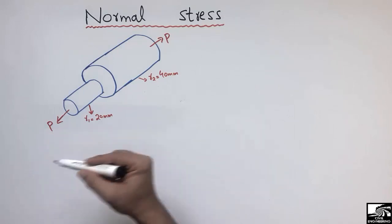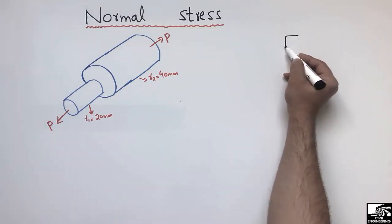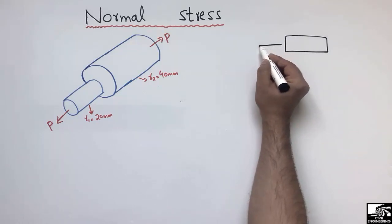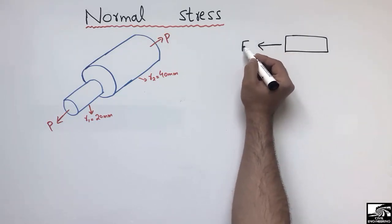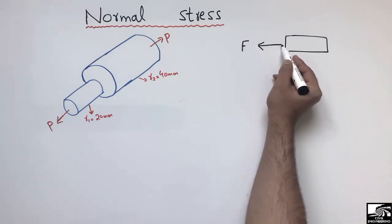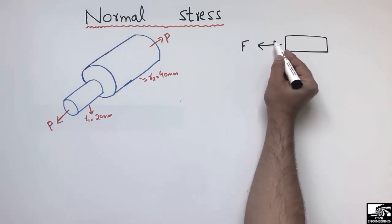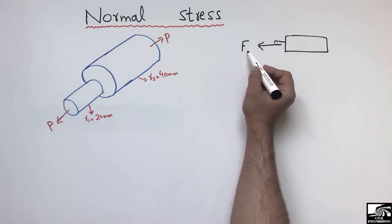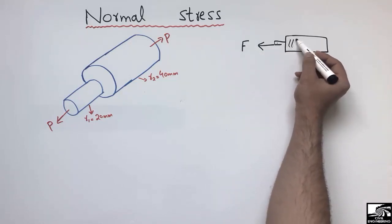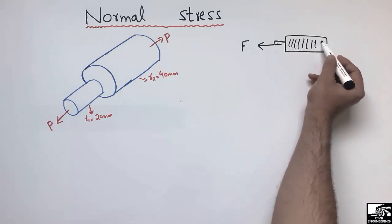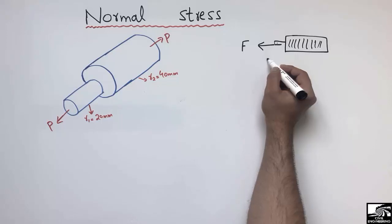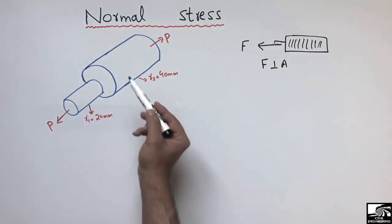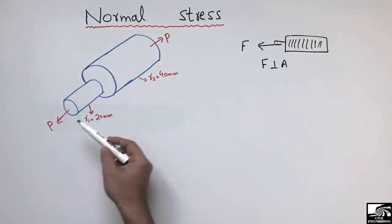If we consider any object subjected to a force F acting perpendicular to the object — making a 90-degree angle — this force will create stress inside the object. We call these stresses normal stresses, because the force is perpendicular to the area.